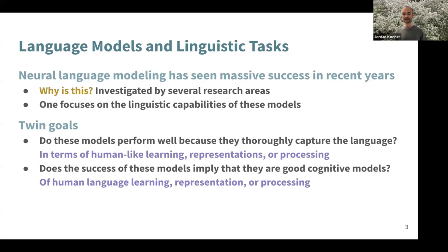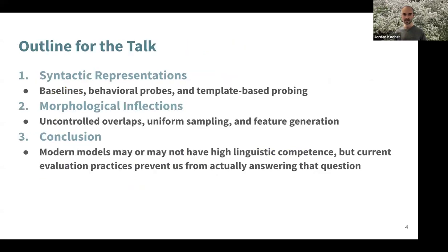At the same time, you can ask: if they are good models of language, does that imply they are also good cognitive models? Does this tell us about how humans do language? For this talk, I'd like to look at how people have approached these questions and some reinterpretations of those results for syntax and morphology. My conclusion is that these modern models may or may not have high linguistic competence, but current evaluation practices prevent us from actually answering that question. I'll give some suggestions for improvements.